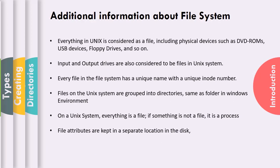Here is some additional information about the file system. Everything in UNIX is considered a file, including physical devices such as CD-ROMs, USB drives, floppy drives, and so on. Input and output devices are also considered to be files in UNIX. Every file in the file system has a unique name with a unique inode number.